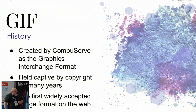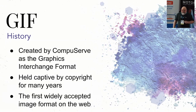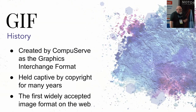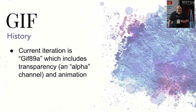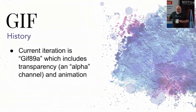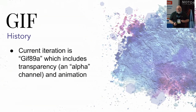GIF was created by CompuServe — anybody remember CompuServe? The Graphics Interchange Format: they needed an image format for the network, so they invented this one. They held the copyright for many years and people were afraid they would sue the entire internet at one point, but that never happened. It's the first widely accepted image format on the web. GIF 89a came out in the 90s, which included an alpha channel for transparency and animation — revolutionary because you got moving things on the web that nobody had ever seen before.